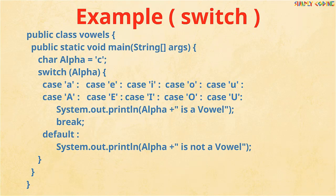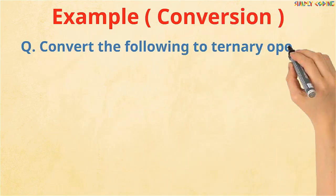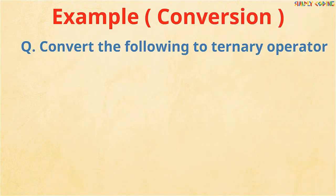Since for all vowels we need to print the same message, we can let them fall through and give one single print statement — remember to put a break after that. All others are by default not a vowel, so we put in a default statement. Another kind of problem you can expect is conversion from if-else to switch or to the ternary operator.